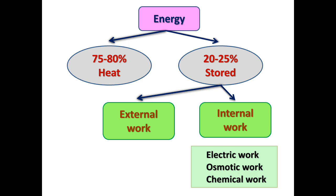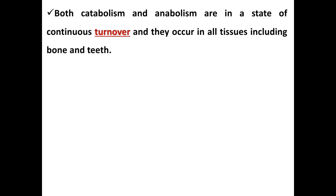Under normal conditions, 75-80% of this energy appears as heat. The remaining 20-25% is stored in the form of ATP and creatine phosphate, which can be released and transformed into work. There are two types of work: external work and internal work. External work is mechanical work occurring during muscular exercise. Internal work includes electric work for production of resting membrane potential.